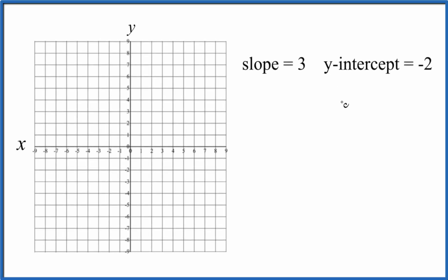Here's how you can graph the line and write the equation when we have slope of 3 and a y-intercept of negative 2.